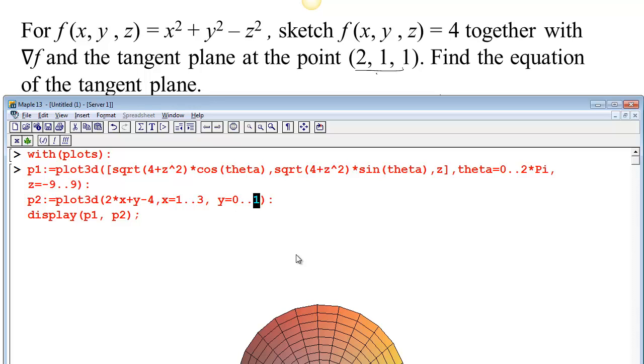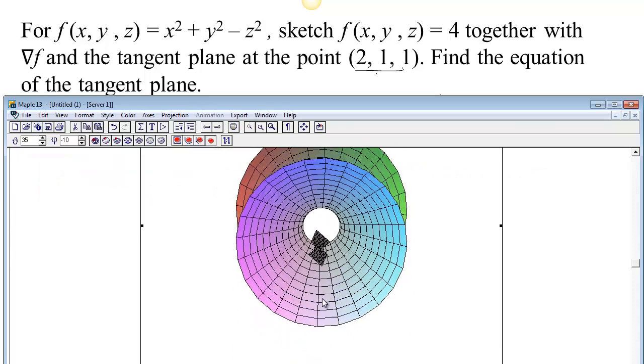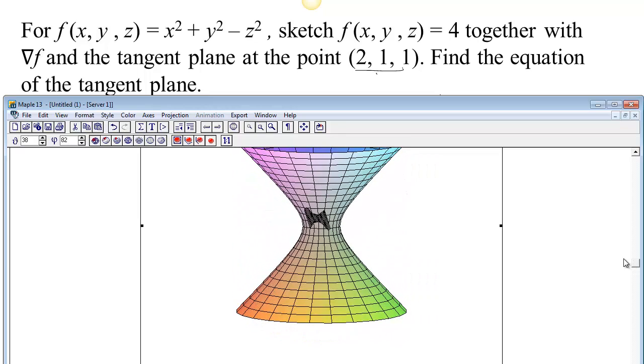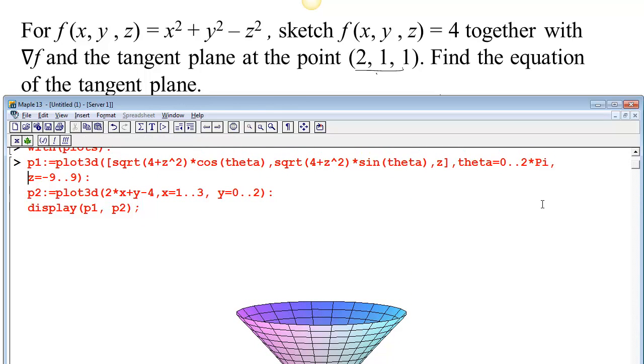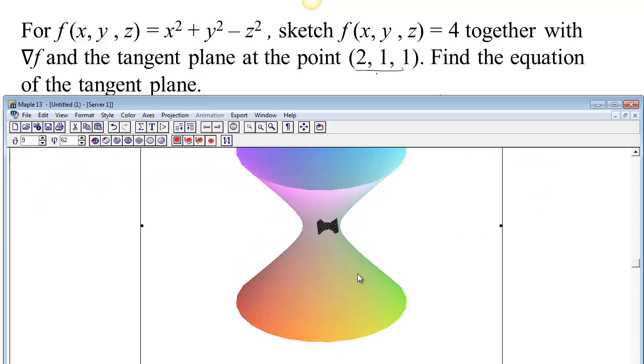I wanted to make sure that that was a range around the y value. Now we get a better tangent plane. We can see that it is tangent there. It might be nice, maybe to change the style on one surface or the other. Maybe we could make the hyperboloid nice and smooth. So I'm going to do style=patchnogrid. Let's pass that style parameter there. Okay, we've got our tangent plane now.